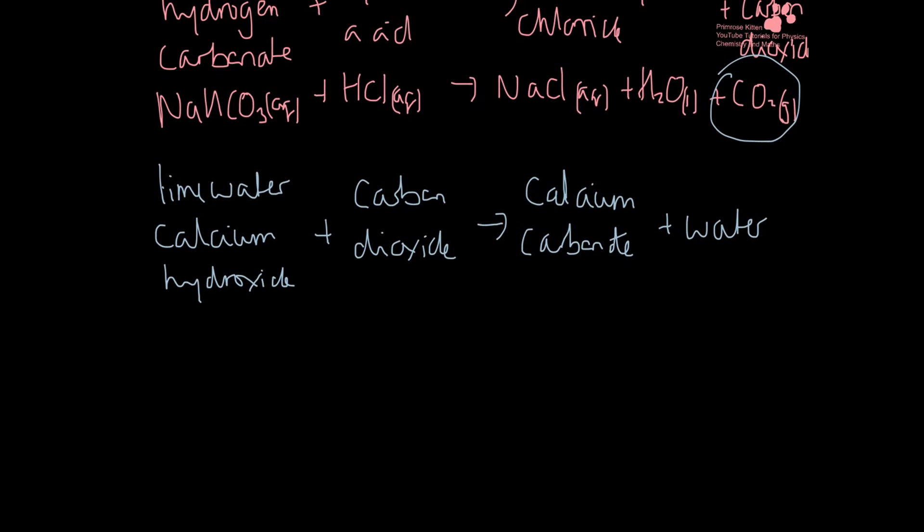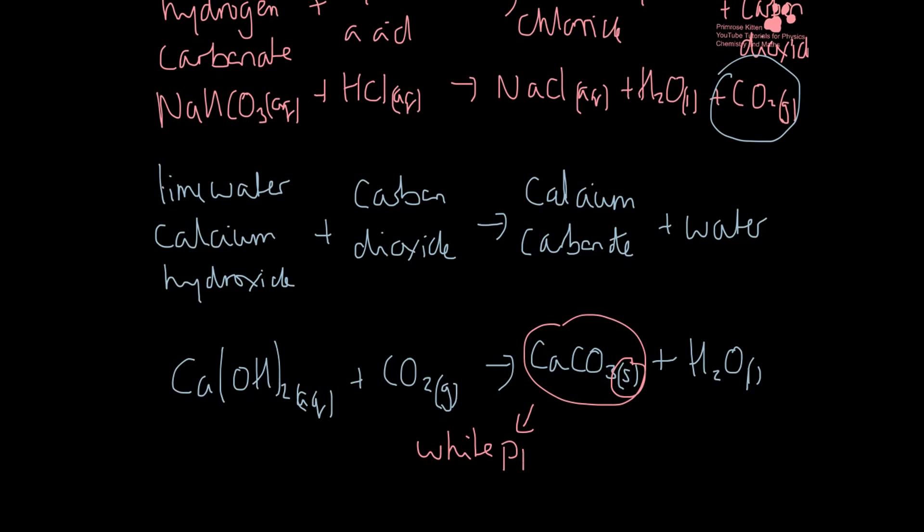There we go, you've got that in the end. So we have the Ca(OH)2 aqueous plus the CO2 gas. It gives us CaCO3, that is a solid, plus H2O, which is our liquid. And it is this bit here, and we can tell because that is a solid, that gives us a white precipitate, which means it goes cloudy.